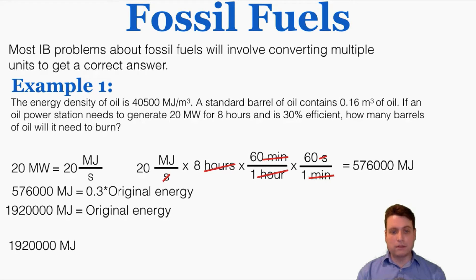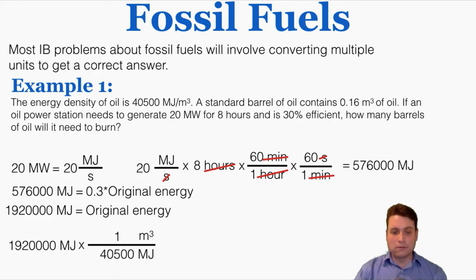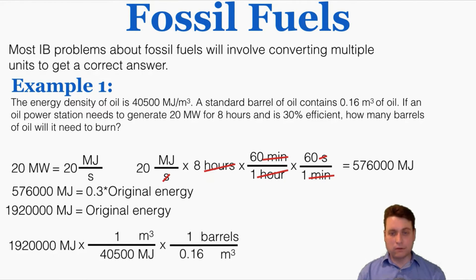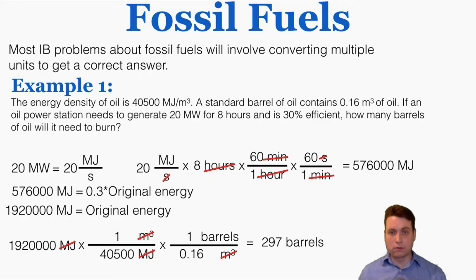Using the energy density, every 40,500 megajoules of energy equals 1 meter cubed of oil burned. Converting 1,920,000 megajoules by that ratio gives meters cubed of oil. Then converting meters cubed to barrels using 0.16 meters cubed per barrel — putting meters cubed in the denominator to cancel it out and barrels in the numerator — canceling things out gives a final value of 297 barrels of oil. So over the eight hours, we need to burn 297 barrels to produce that electricity.